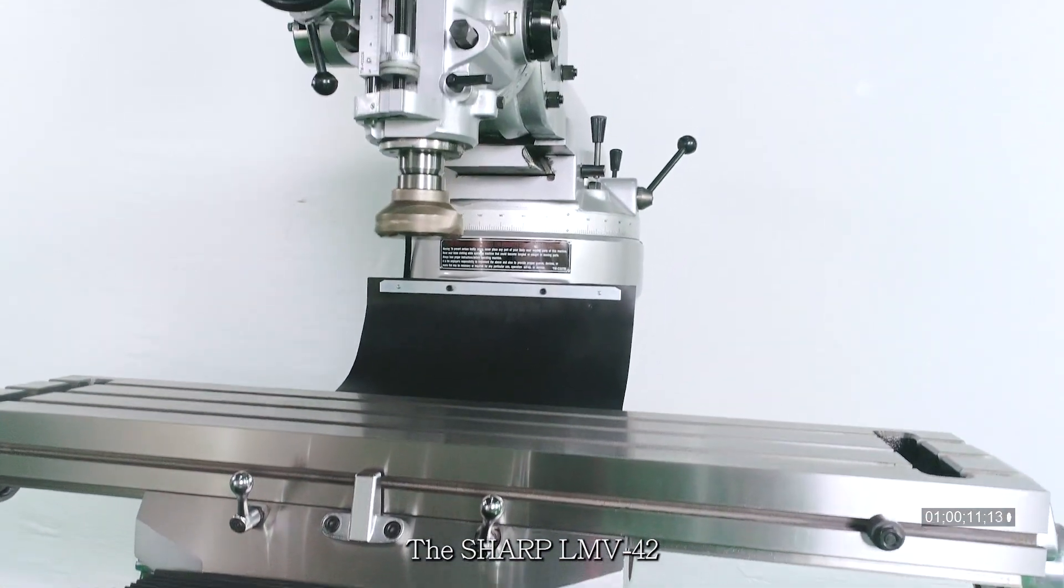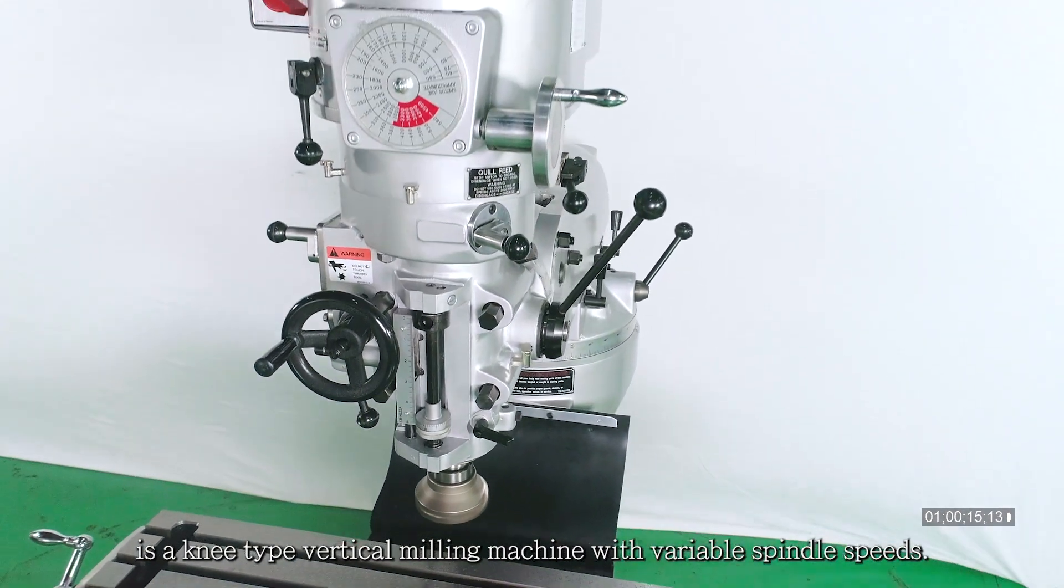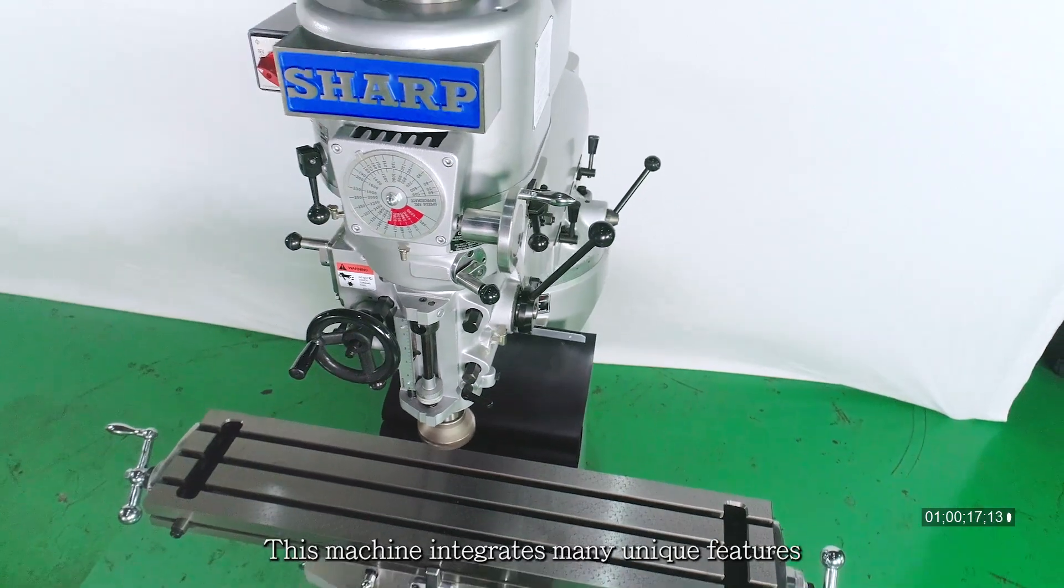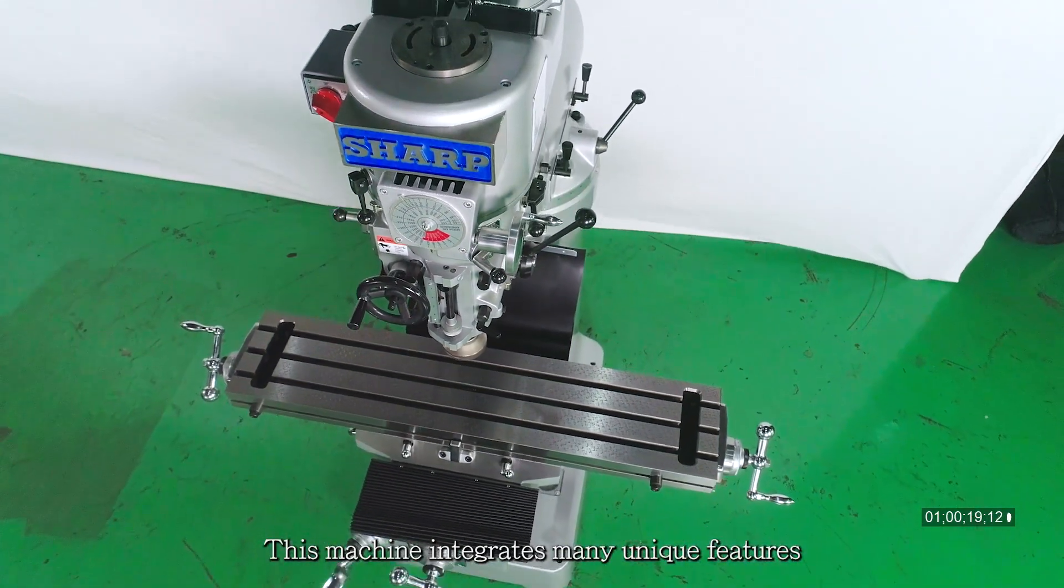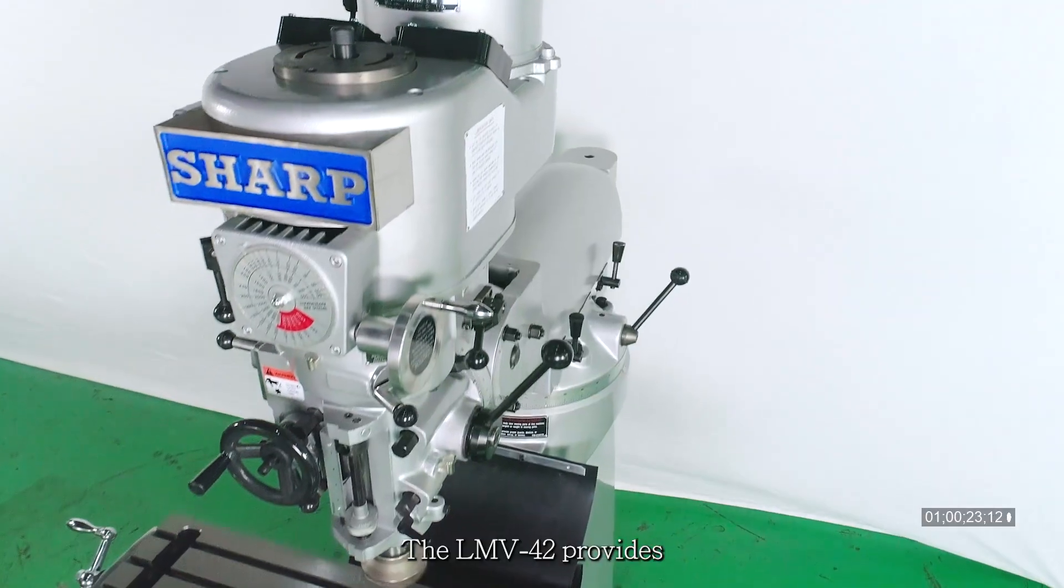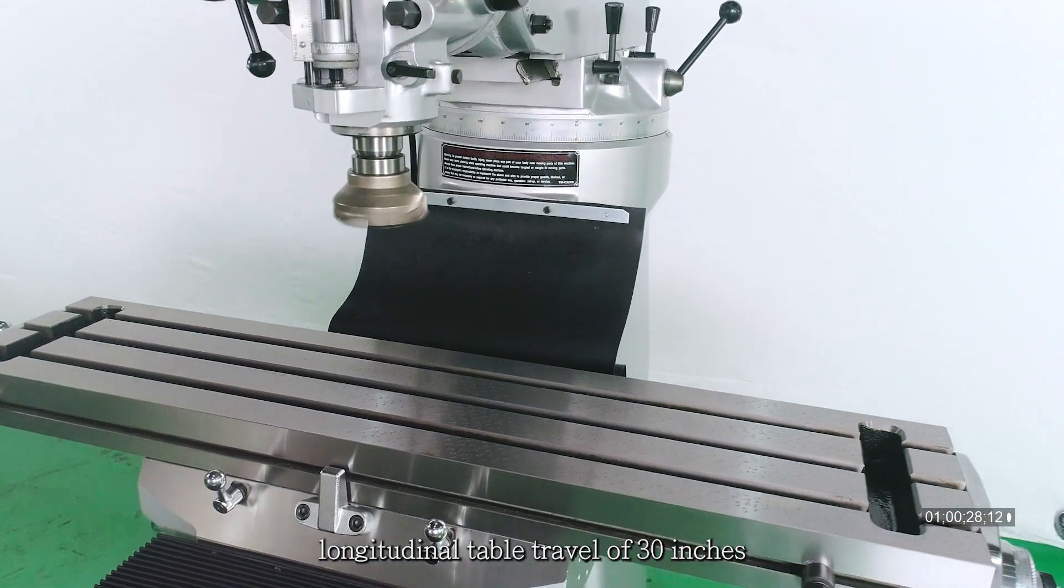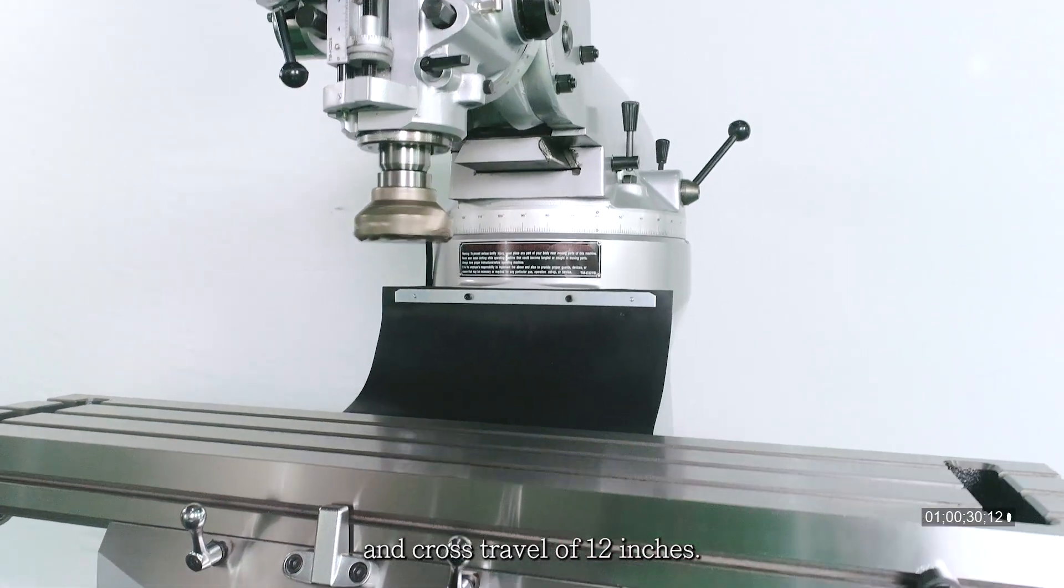The Sharp LMV42 is a knee-type vertical milling machine with variable spindle speeds. This machine integrates many unique features when compared to similar machines on the market. The LMV42 provides longitudinal table travel of 30 inches and cross travel of 12 inches.